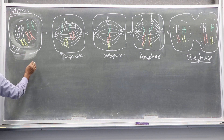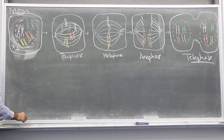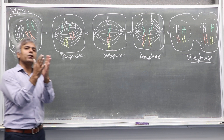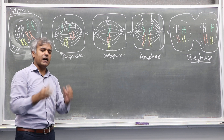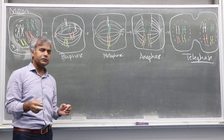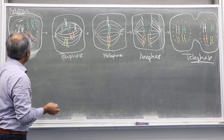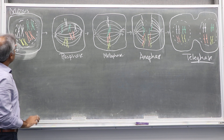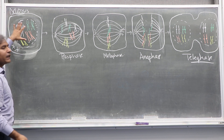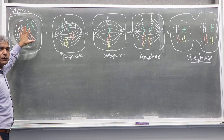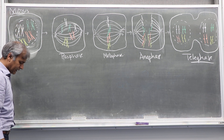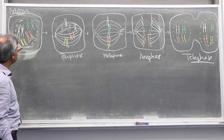These two are also sister chromatids. These sister chromatids are held together by very specialized proteins which are called cohesins. And all of this duplication of the genome took place in the S phase of the cell cycle.